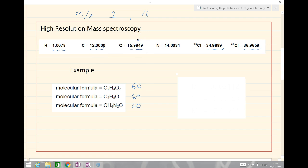So to work them out, you just simply add them together. So this would be two lots of 12, four lots of the one which is just above one here for the hydrogen, and two lots of the oxygen which is just below 16. Same for the second one and same for the third one.